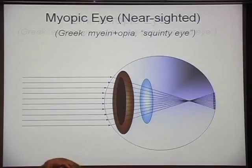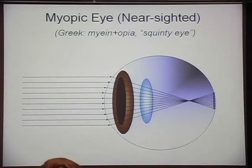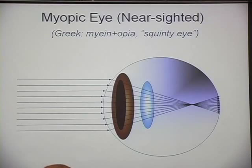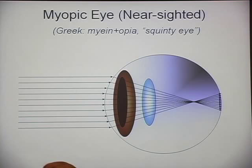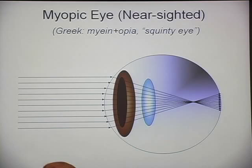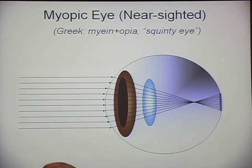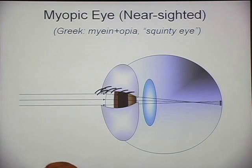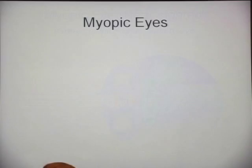Emetropic means well-focused, well-proportioned — an eye with no problems. It's a theoretical type of eye. If you are nearsighted, you have a myopic eye: the light focuses too strongly and comes to an image before it hits your retina. The Greek origin of the word is 'squinty eye' — because people who are myopic tend to squint to see better. Squinting reduces the aperture so what was a big blur becomes just a small blur, and you can manage to get through the day.